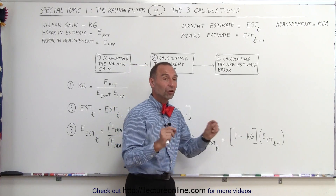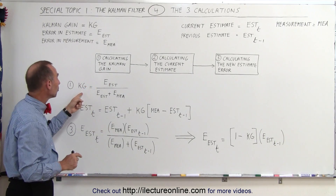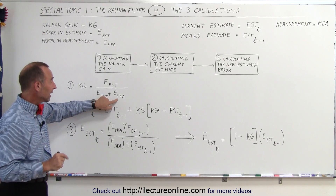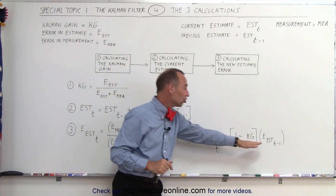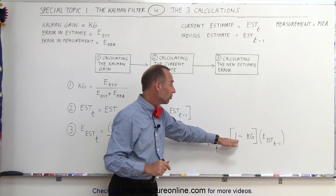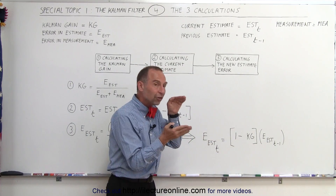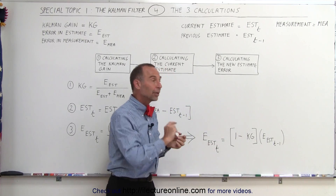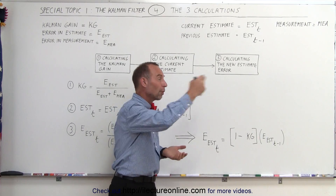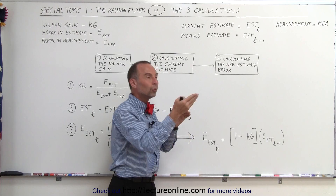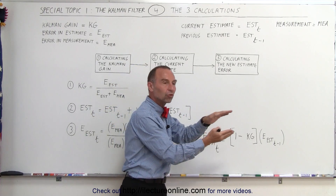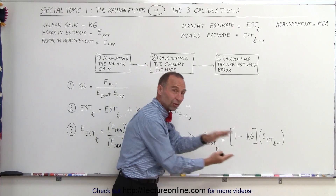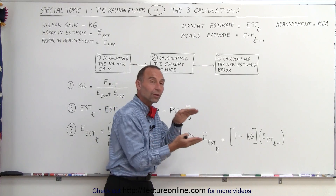However, if the Kalman gain is very small, that means the error in the measurement is very large. When the error in the measurement is very large, we don't want to change the error in the estimate very quickly. We want to very slowly zero in on the correct value, because measured values coming in with large errors can throw us off quickly. We want to make sure we don't get fooled by that error in the measurement and zero in much more slowly. If the errors in the measurement are very small, we want to zero in quickly; if they are large, we want to zero in a little bit slower.